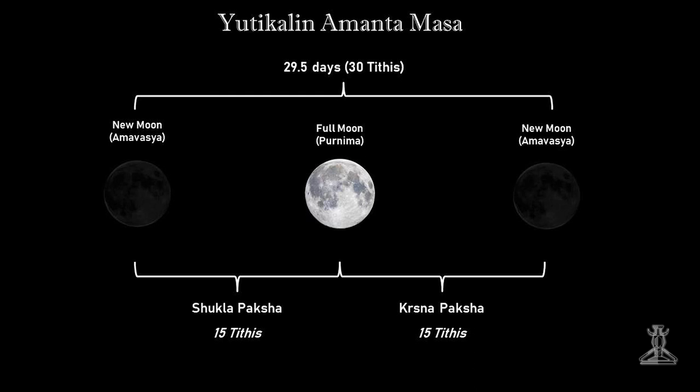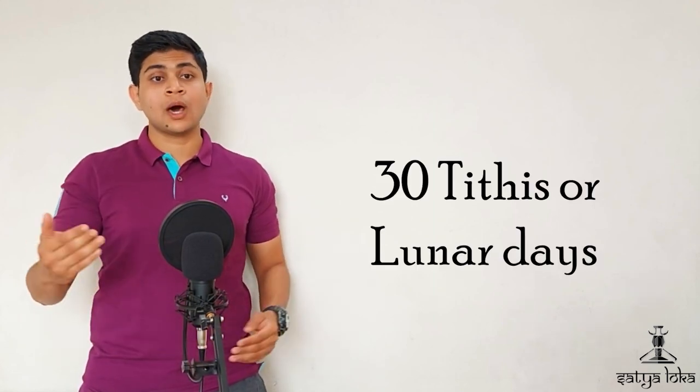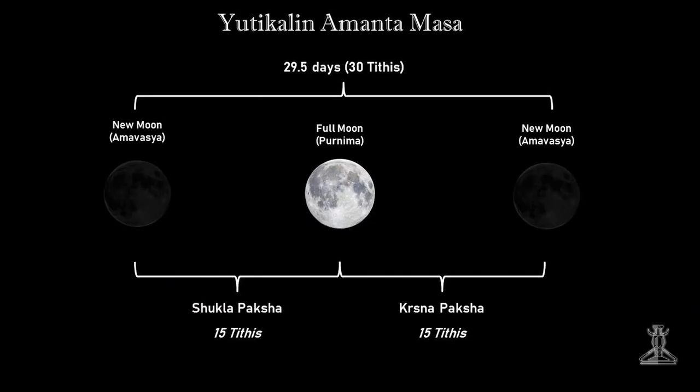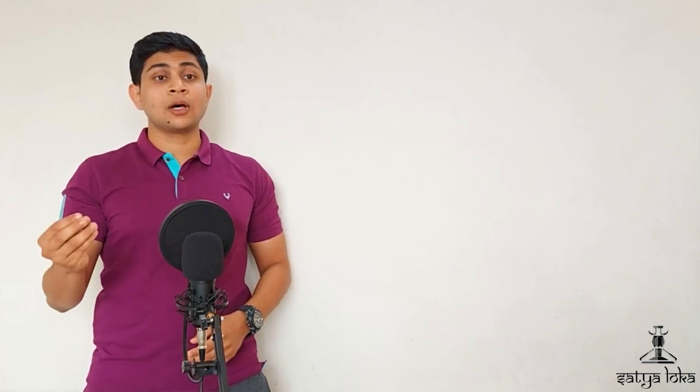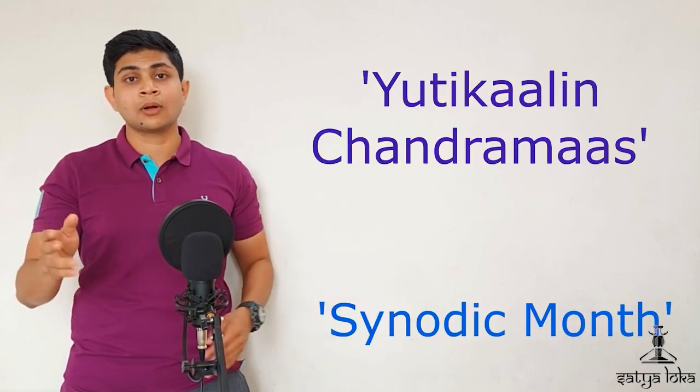Today we use the Amavasyantha system predominantly. In an Amavasyantha system, a month starts with an Amavasya and ends with an Amavasya. A month in this calendar system has a total of 30 Tithis or lunar days. Out of these 30 Tithis, 15 are in Shukla Paksha or the waxing fortnight, while the remaining 15 are in the Krishna Paksha or the waning fortnight. Such a mass or month is called Ayutikaleen Chandra mass or the synodic month in modern astronomy.